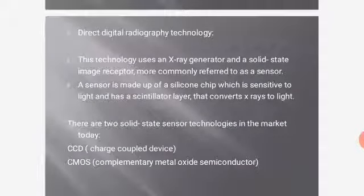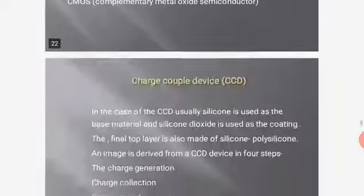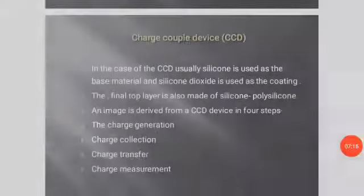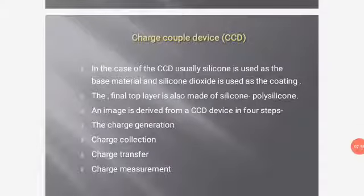Direct Digital Radiography Technology uses an X-ray generator and a solid-state image receptor, commonly referred to as a sensor. A sensor is made up of a silicon chip sensitive to light with a scintillator layer that converts X-rays to light. There are two solid-state sensor technologies: the Charge-Coupled Device (CCD) and the Complementary Metal-Oxide Semiconductor (CMOS). For CCD, silicon is used as the base material, silicon dioxide as the coating, and the final top layer is also made of silicon or polysilicon.